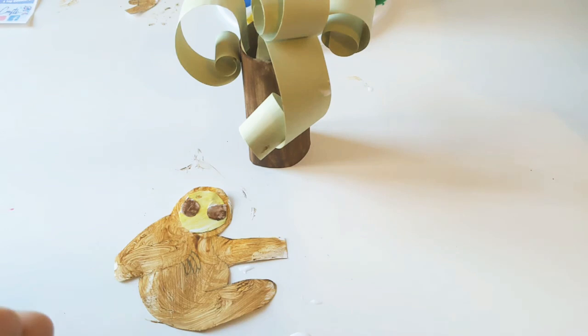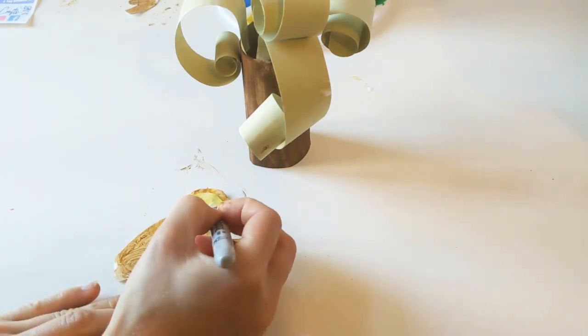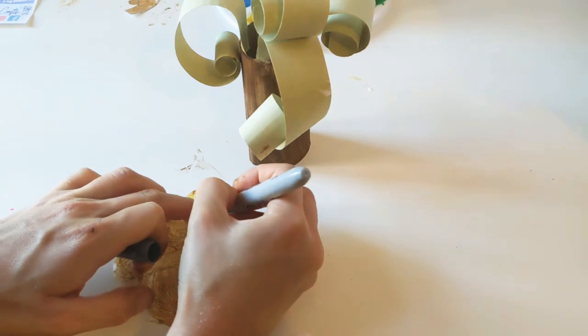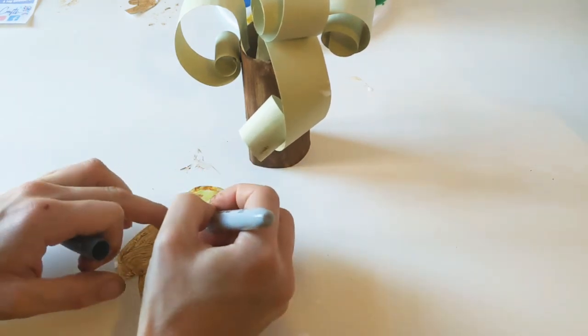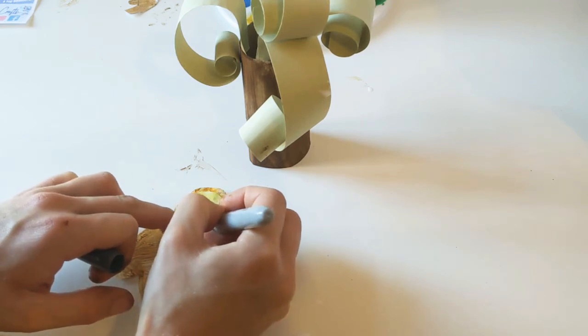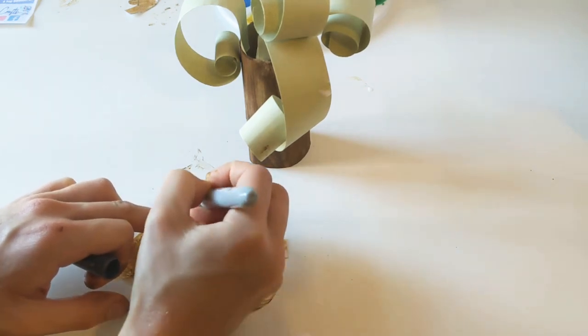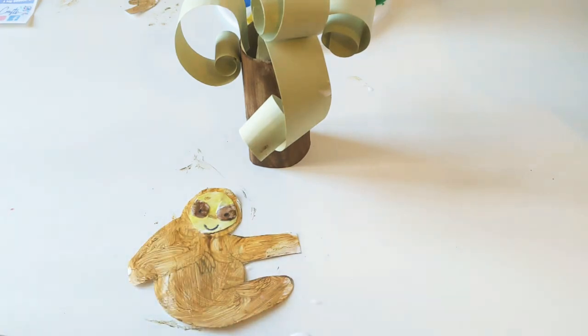There we go. I'm just going to draw on some little eyes just with a pen. So I'm just going to draw an eye on here and an eye on there and then a big smiley mouth. Like so.